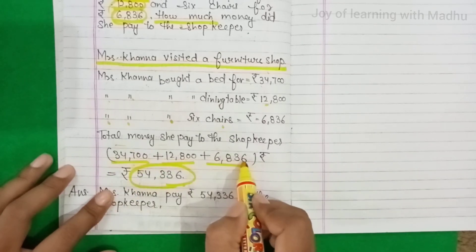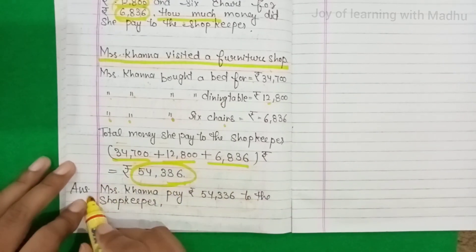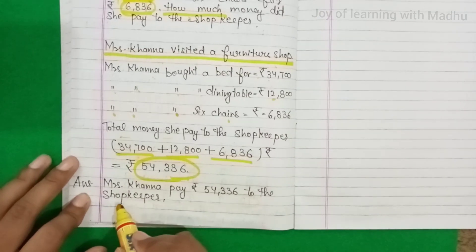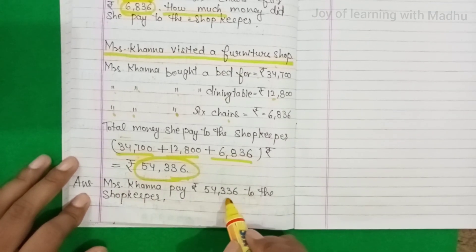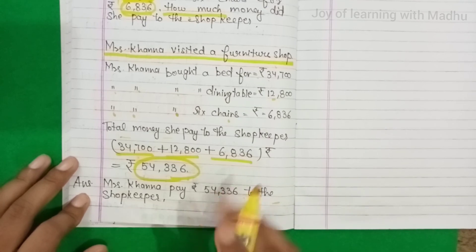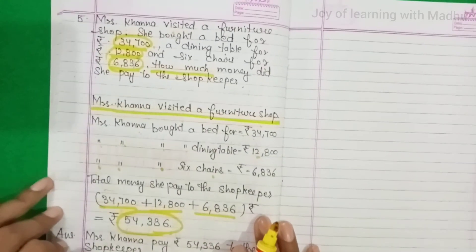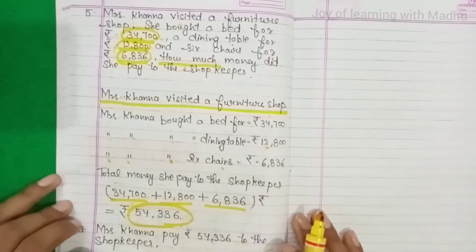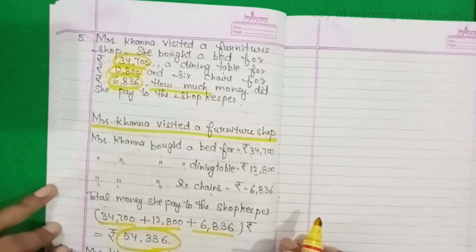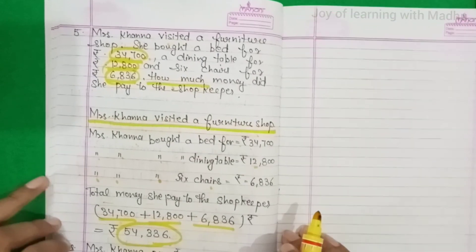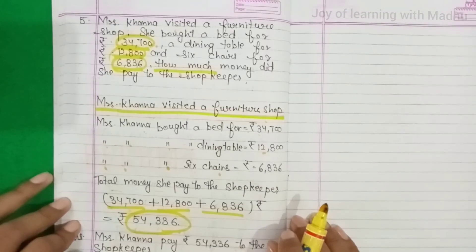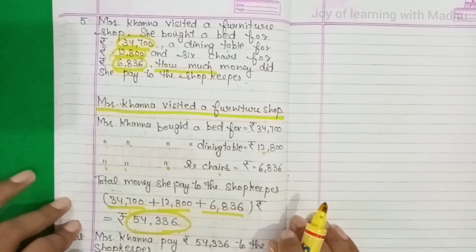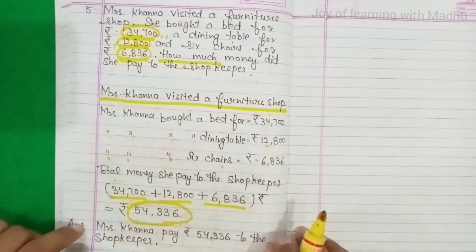तीनों को add करने पर answer आया। Mrs. Khanna paid Rs. 54,336 to the shopkeeper. So students, we have finished all five questions related to additional problem sums. I hope you all have understood. Goodbye students.